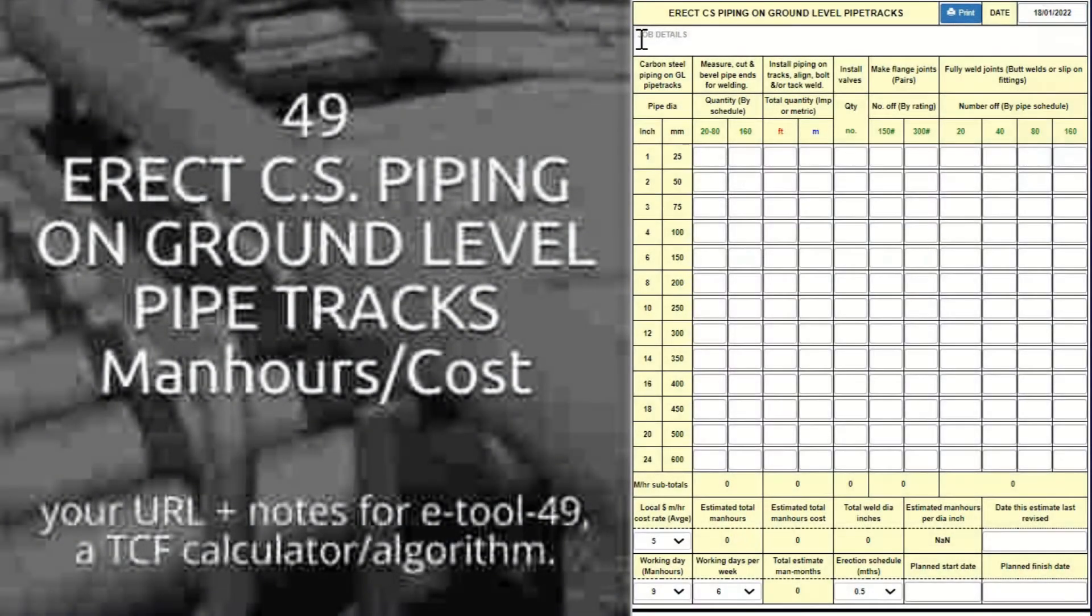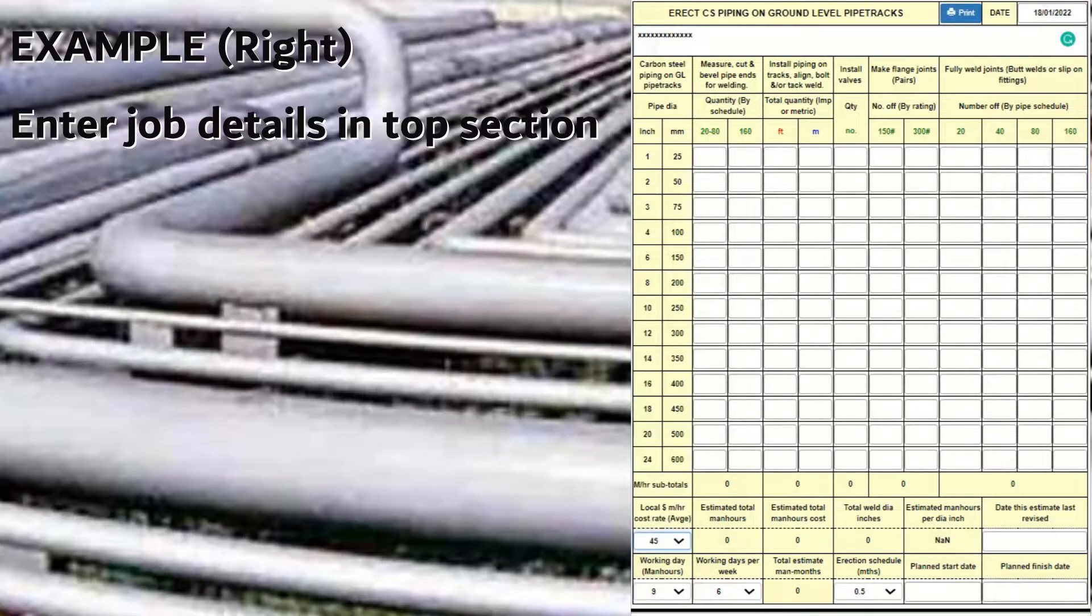E-Tool 49 provides a ballpark estimate for man hours involved in erection of carbon steel piping on ground level pipe tracks.